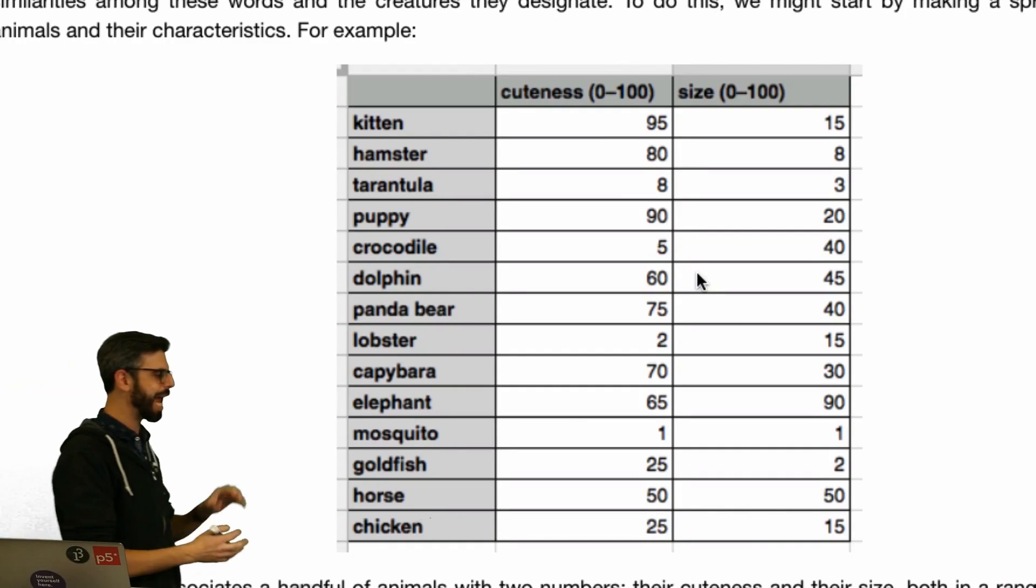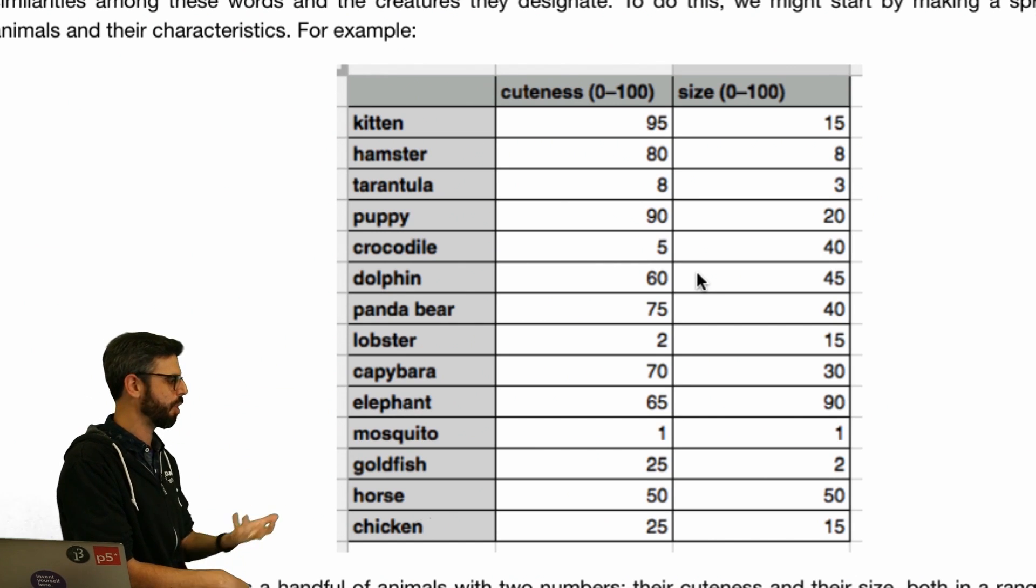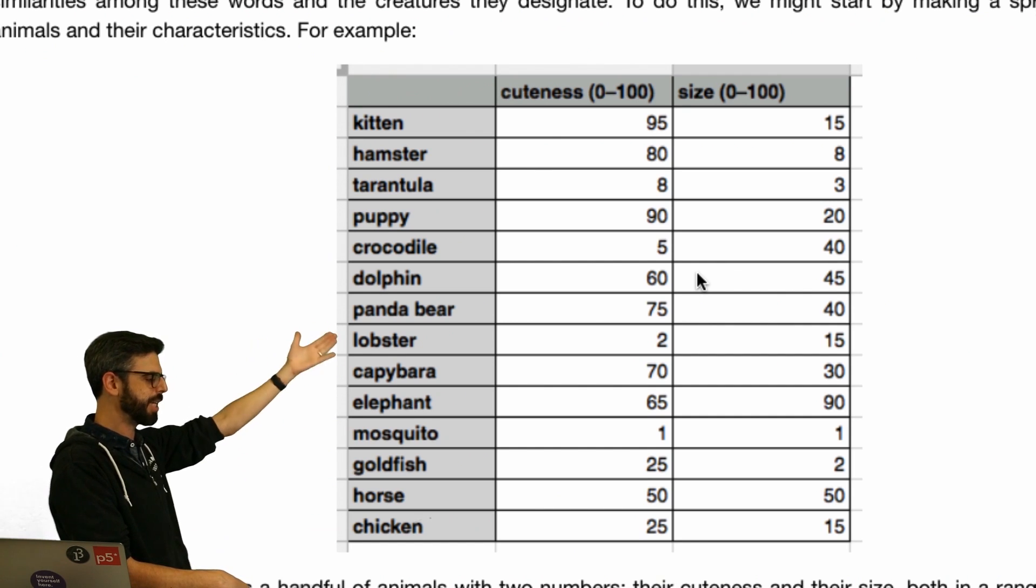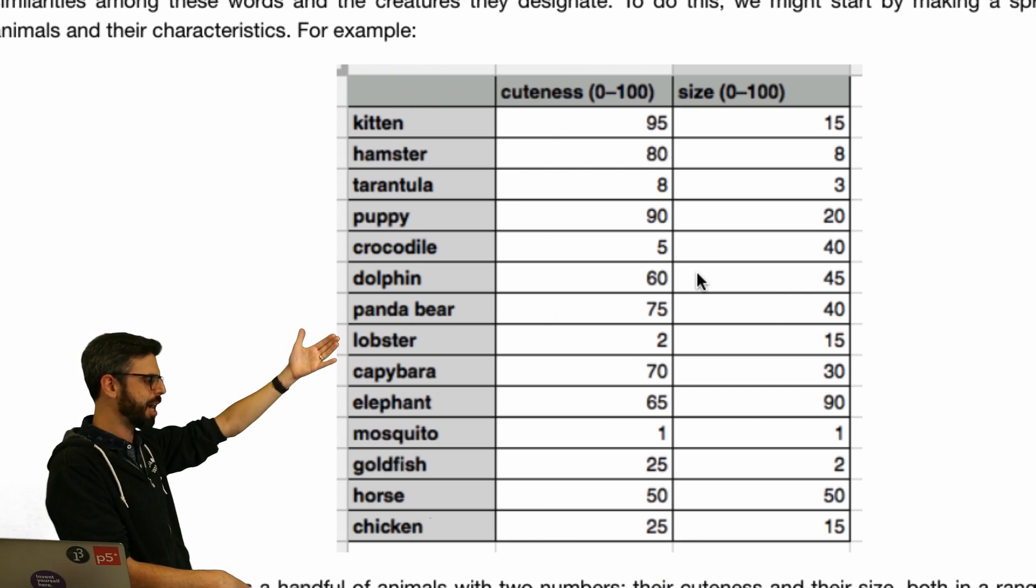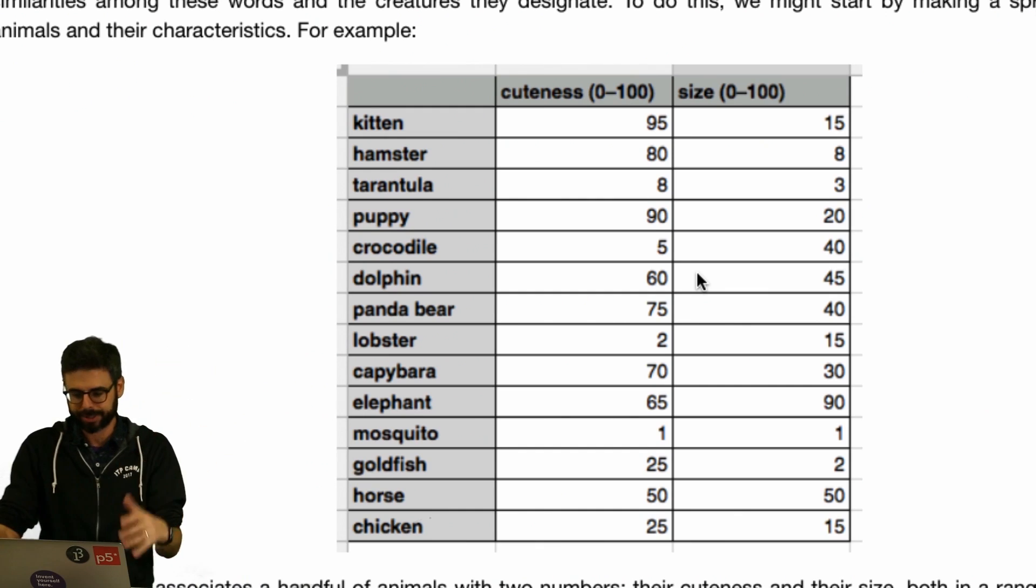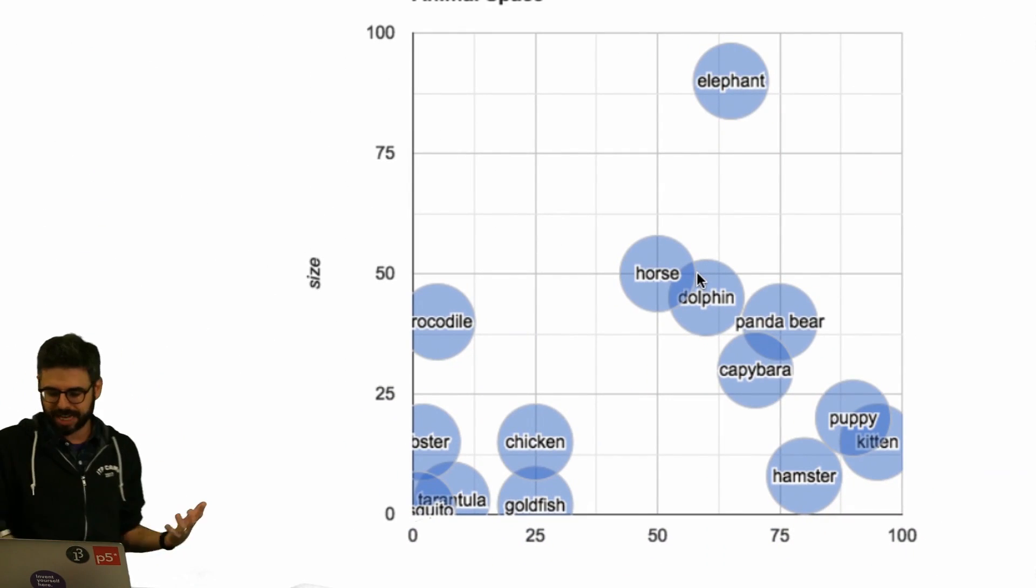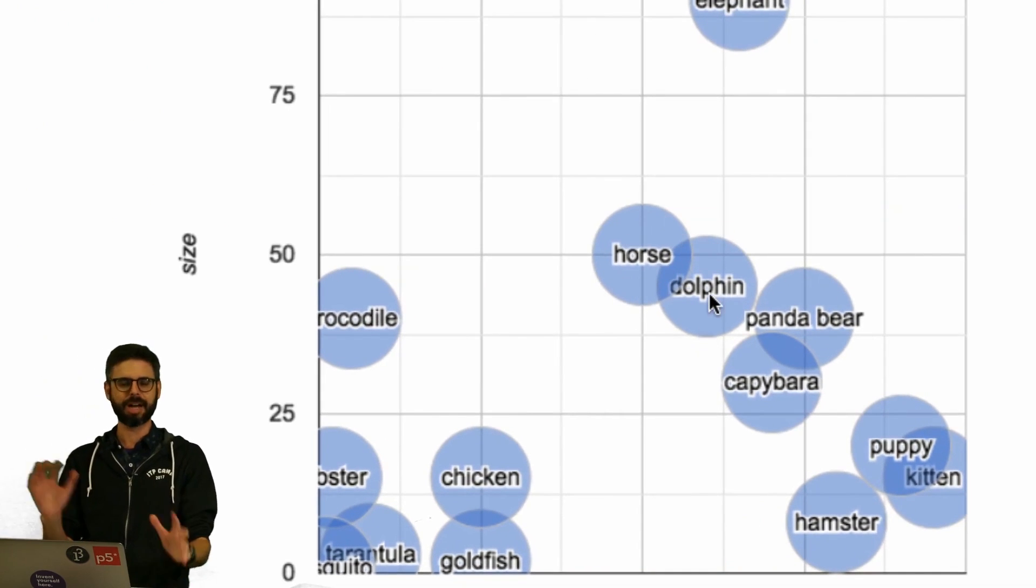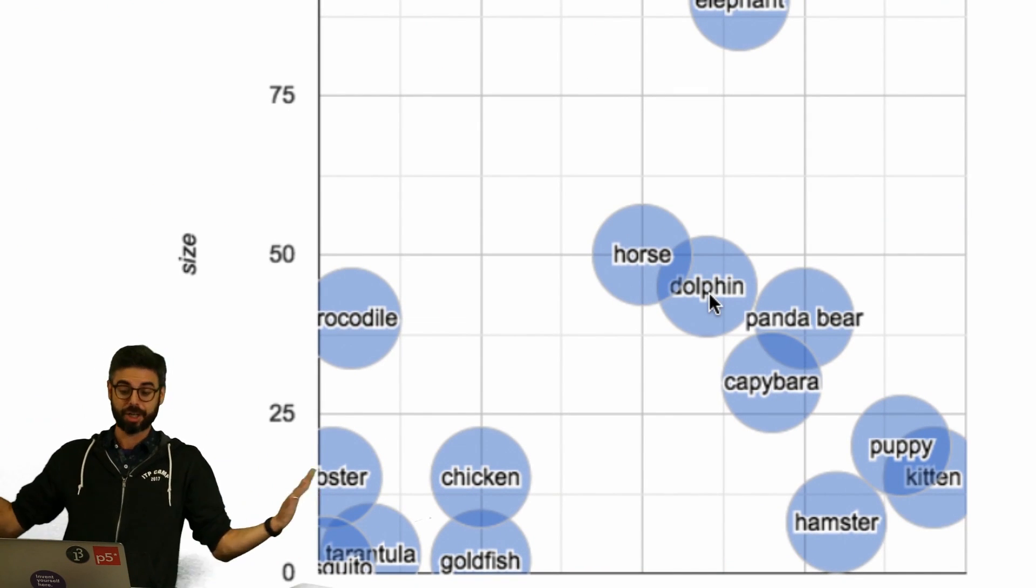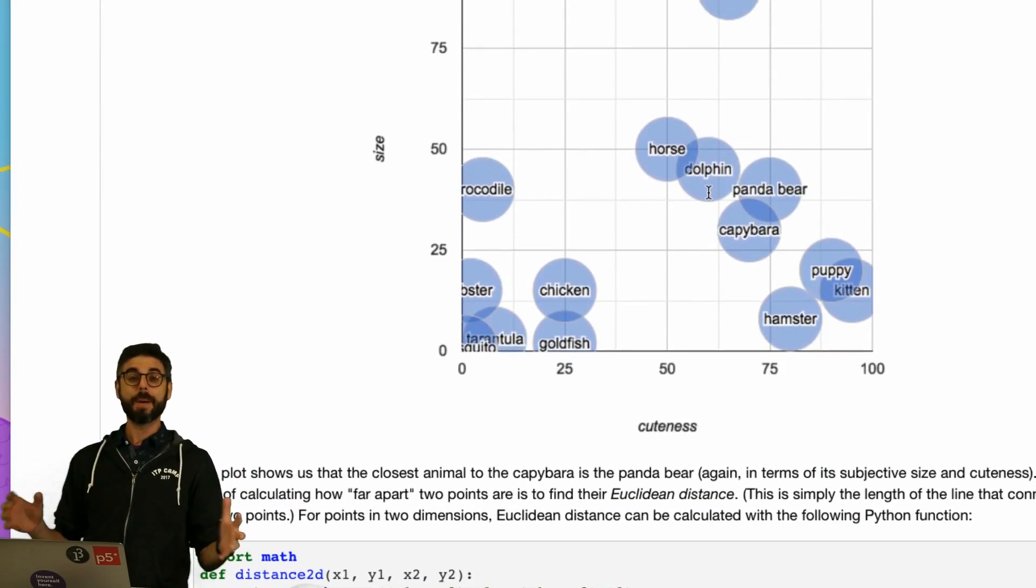This is up to us to sort of figure out and decide based on what we're trying to do. But what if we simplify that, and here's Allison's example, where each word gets essentially two numbers. And those numbers are data properties of that word, like a cuteness score from zero to 100 and a size from zero to 100. So you can see kitten is 95, 15, a hamster is 80, 8, right? There are these numbers that sort of like the label is tied to a set of data points, data properties. So if that's the case, then we can look, we could graph all of those and we could say something like, oh, you know, like a horse and a dolphin are kind of like similar in terms of size and cuteness.